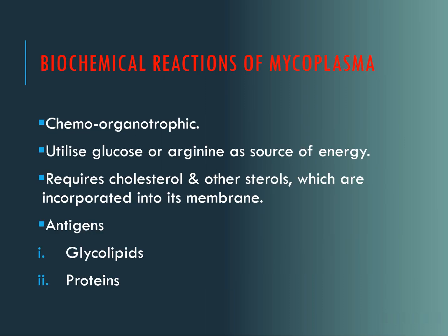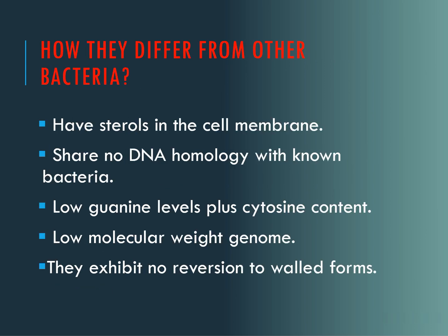The biochemical characteristics of mycoplasma: these are chemo-organotrophic. They can use glucose or arginine as a source of energy. They require cholesterol and other steroids which are incorporated into the membrane. They have antigens which can be glycolipids or proteins. They differ from other bacteria because they have sterols in their cell membrane.